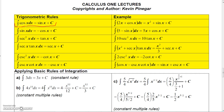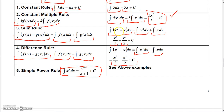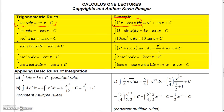Now for basic trig integration rules. The integral of cosine x dx equals sine x plus a constant. For example, to integrate 2x plus cosine x dx, you can take the antiderivative of each term separately. Integrating 2x gives x squared, and integrating cosine x gives sine x, so the result is x² + sine x plus a constant.